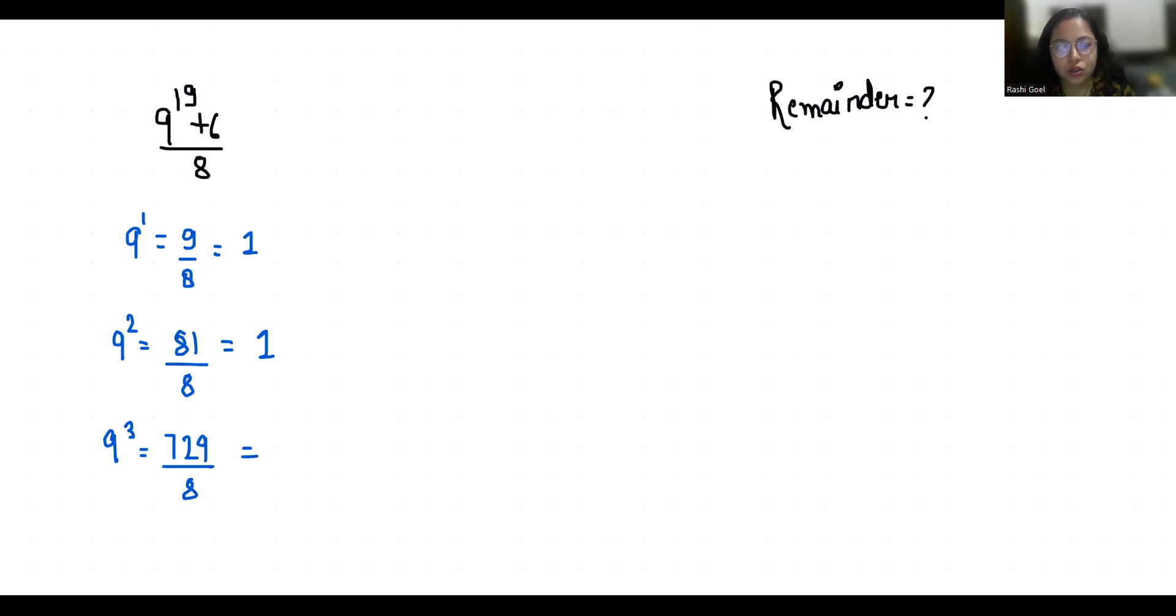So all powers of 9 when divided by 8 give remainder 1. Now for 9 power 19, when we divide it by 8, it gives us remainder 1. But we also have this 6, so 1 plus 6 is 7. Therefore, for 9 power 19 plus 6 divided by 8, the remainder is 7.